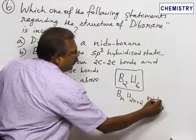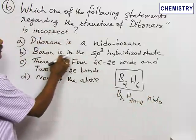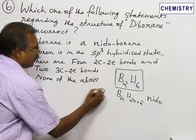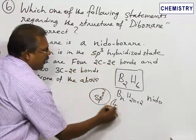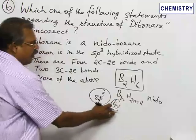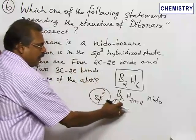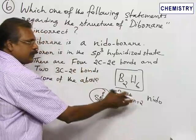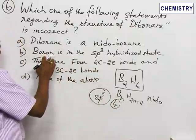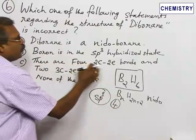B₂H₆ fits the formula BₙH₂ₙ₊₂, which is the formula of a nido borane. Therefore, the first statement is correct. Boron is in fact in the sp³ hybrid state. There are four hybrid orbitals; out of these four, three are used for normal bond formation, and the fourth is an empty hybrid orbital used for banana bond formation. Therefore, statement B is also correct.